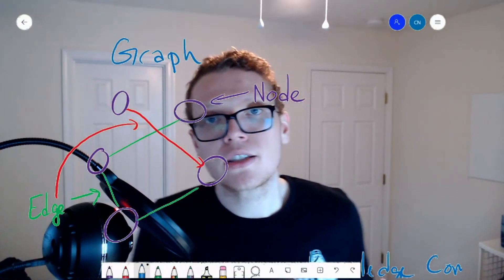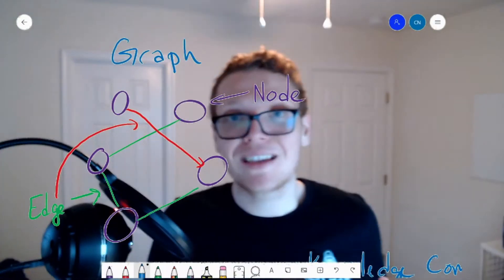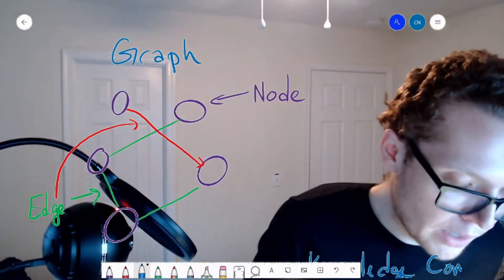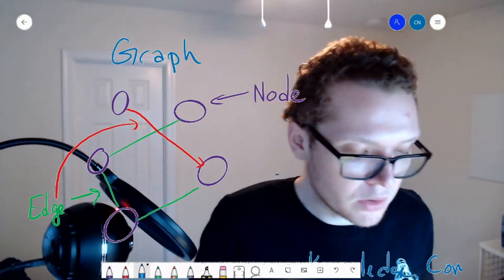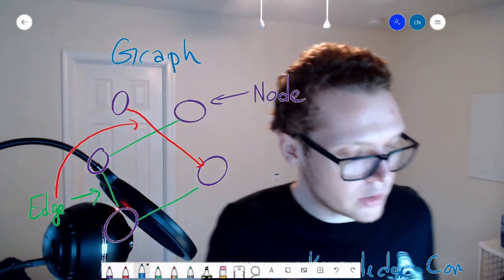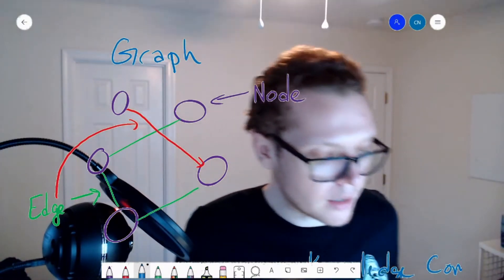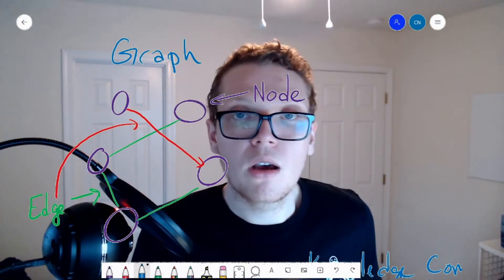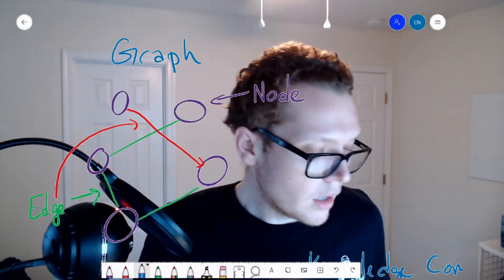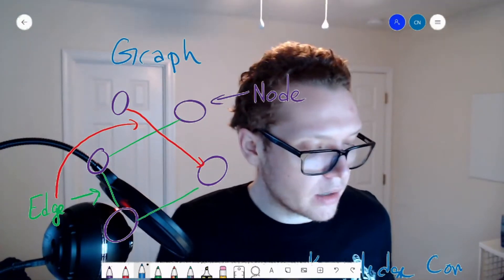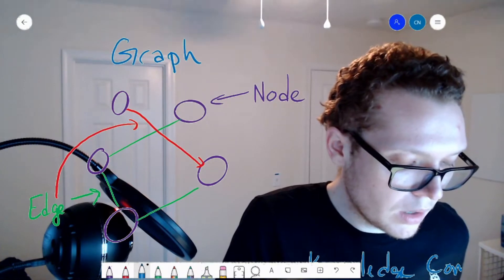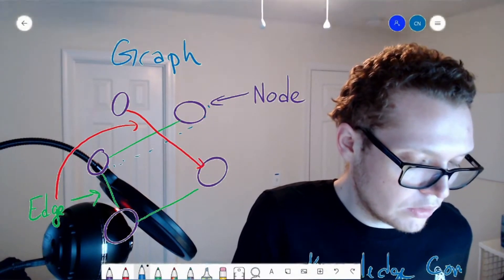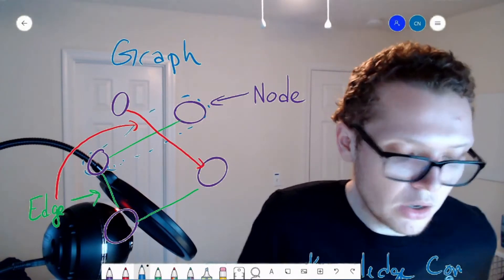Graphs are just a collection of nodes and edges. Visually, we have a set of nodes which are the purple circles, and edges which are the green and red lines. The edges represent relationships between these nodes — here we have a connection between two nodes represented by a green edge.